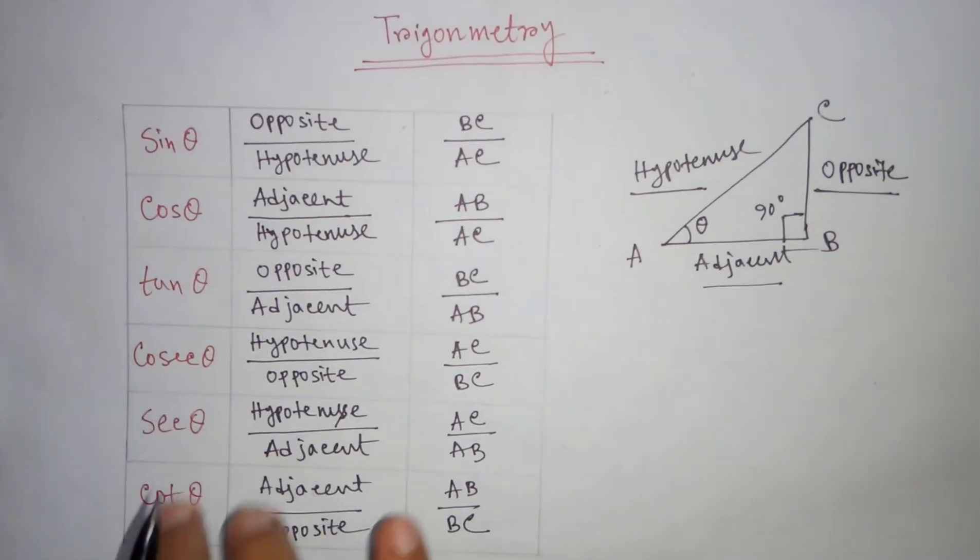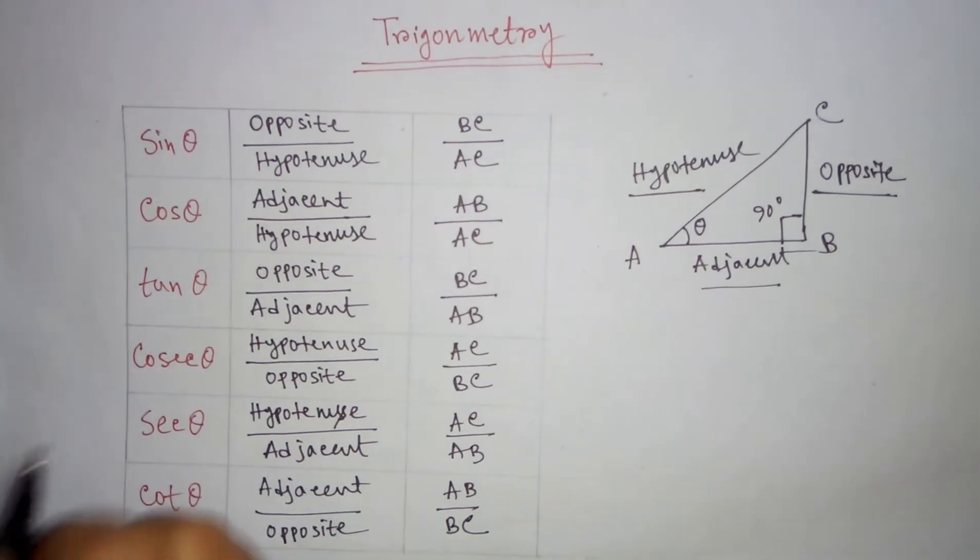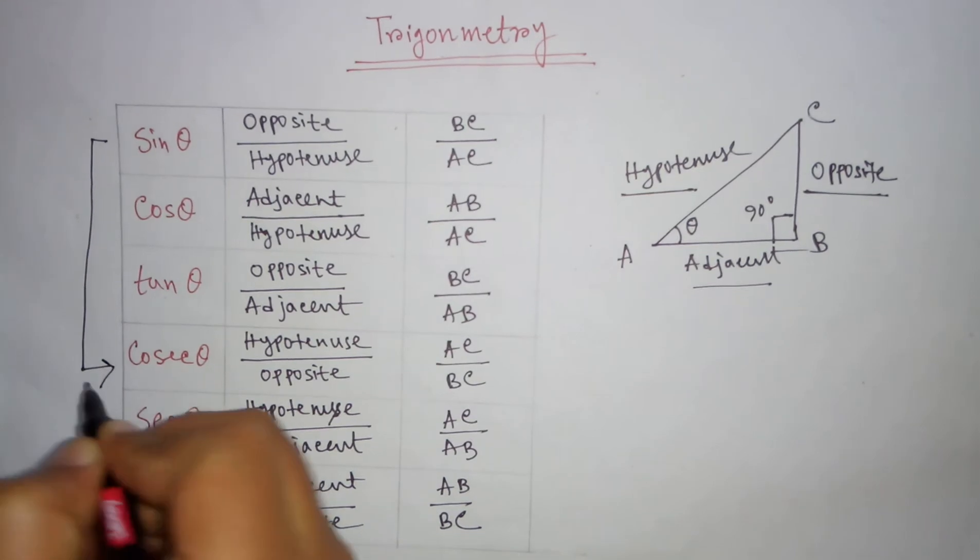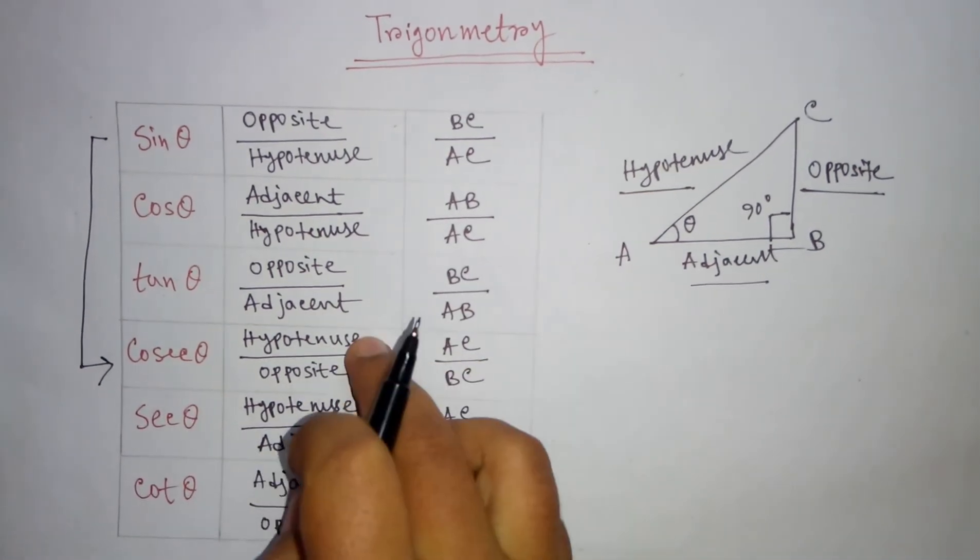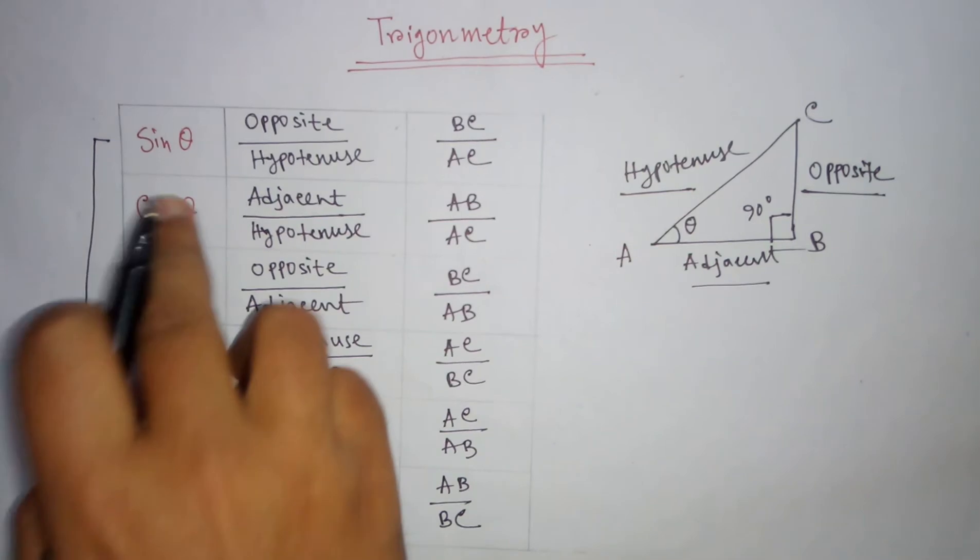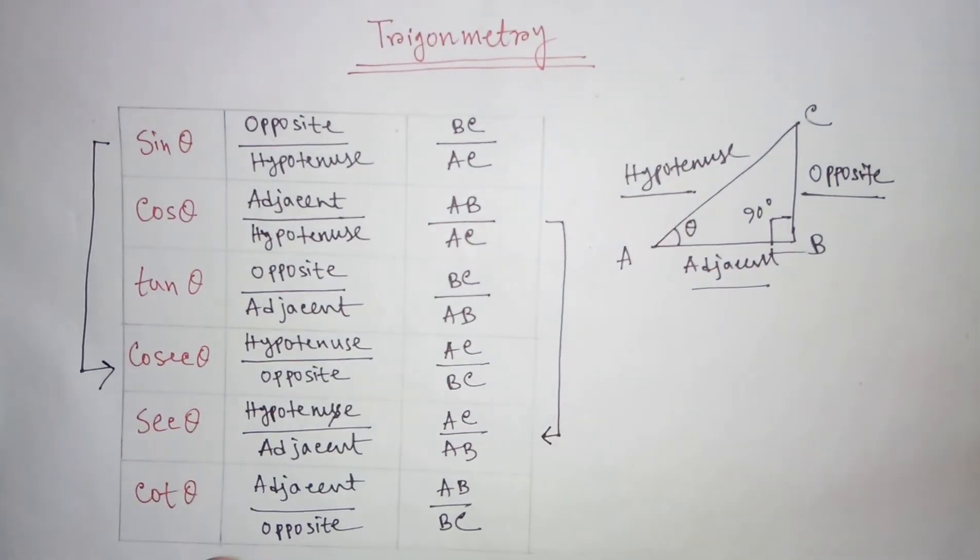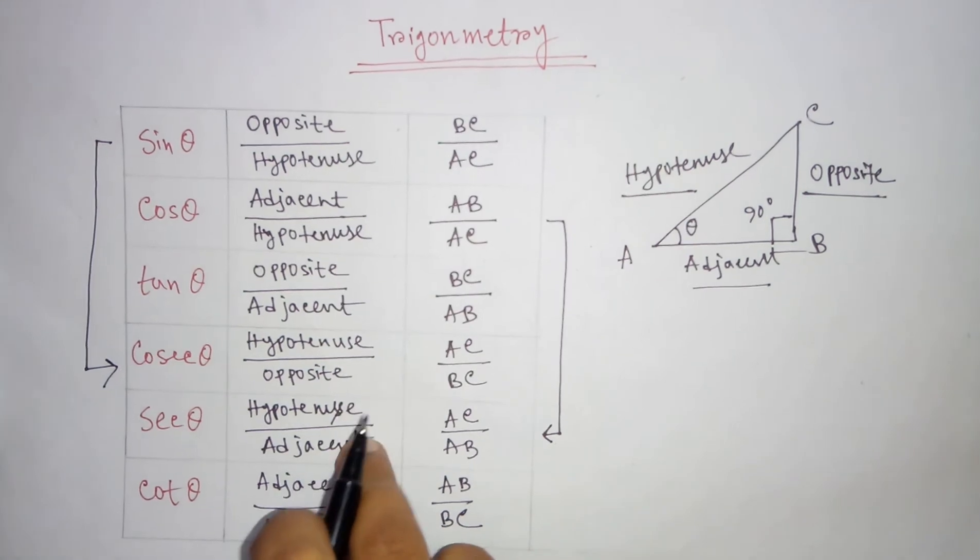What is cosec theta, sec theta, and cot theta? Cosec theta is the opposite of sin theta, so it's hypotenuse divided by opposite. And sec theta is the opposite of cos theta, so it's hypotenuse divided by adjacent.